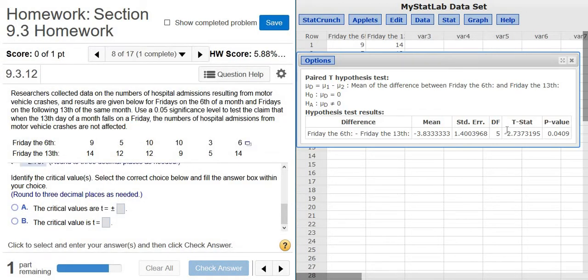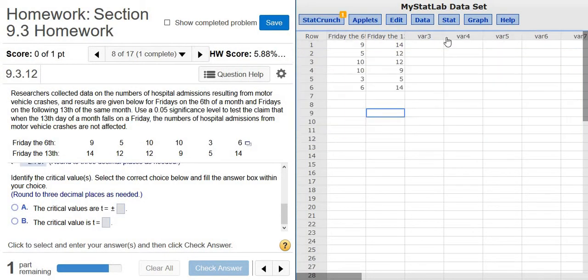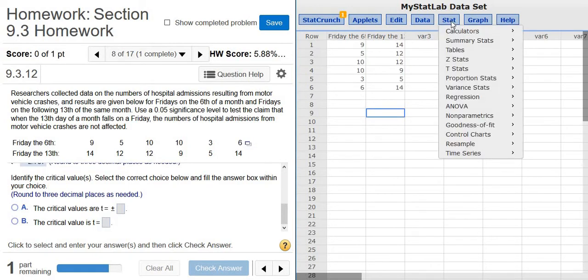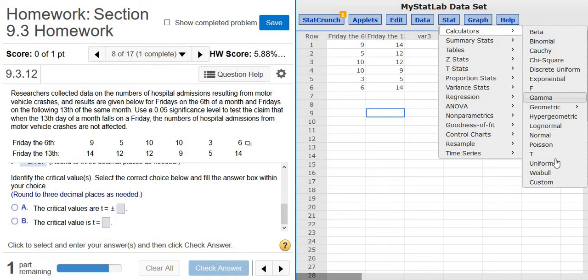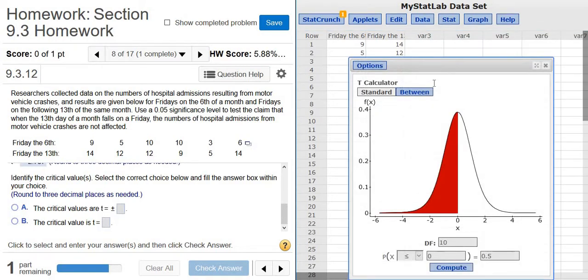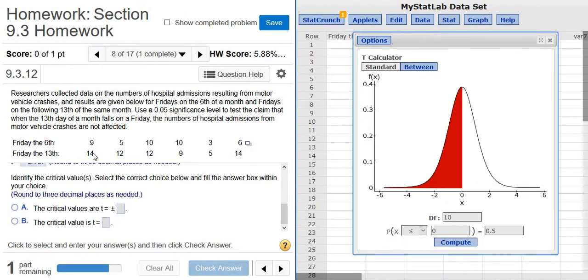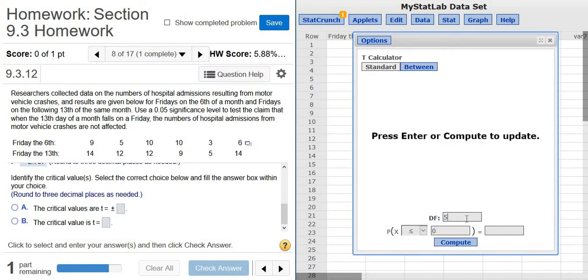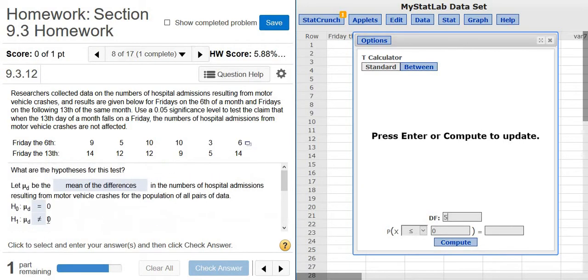Identify the critical values. So to find the critical values, we have to use the t calculator. You go to Stat, Calculators, t. Then we have one, two, three, four, five, six pairs of data. So you do one less, so it's five. And then it doesn't matter which one you pick, you can pick less than or greater than. This is a two-tailed test.